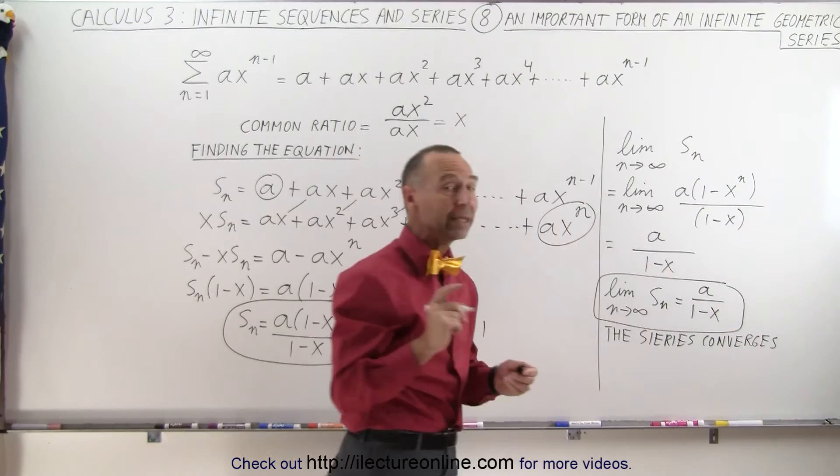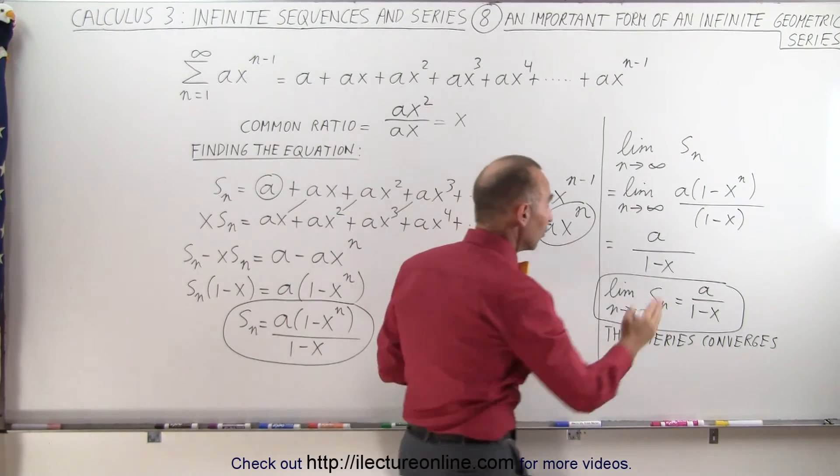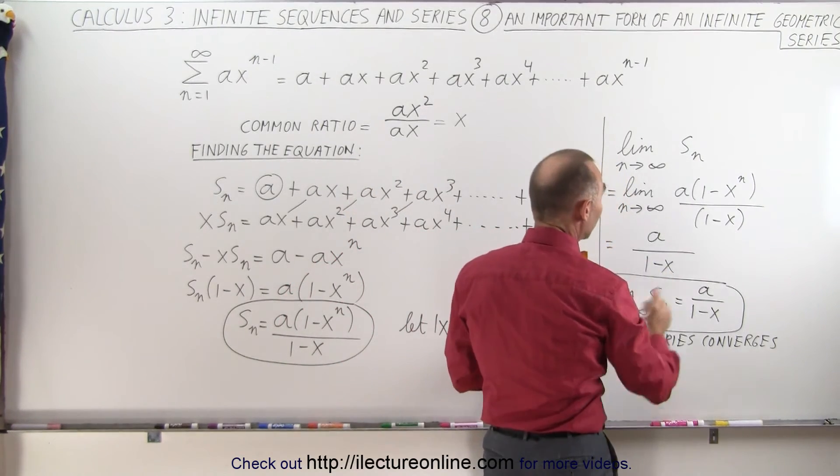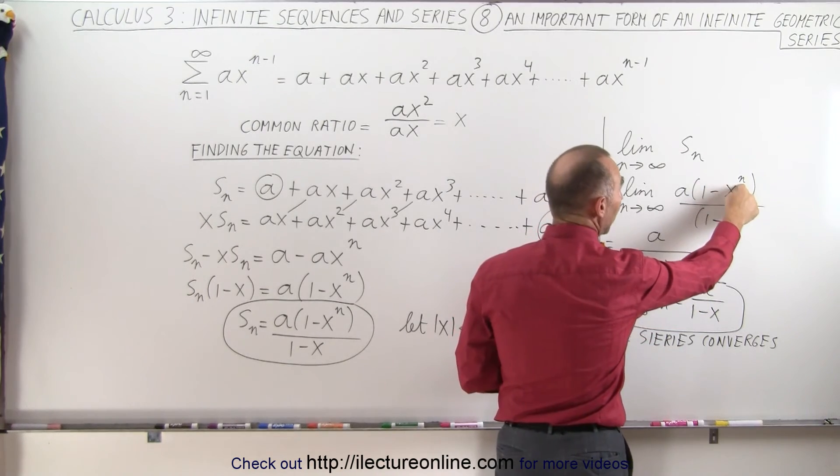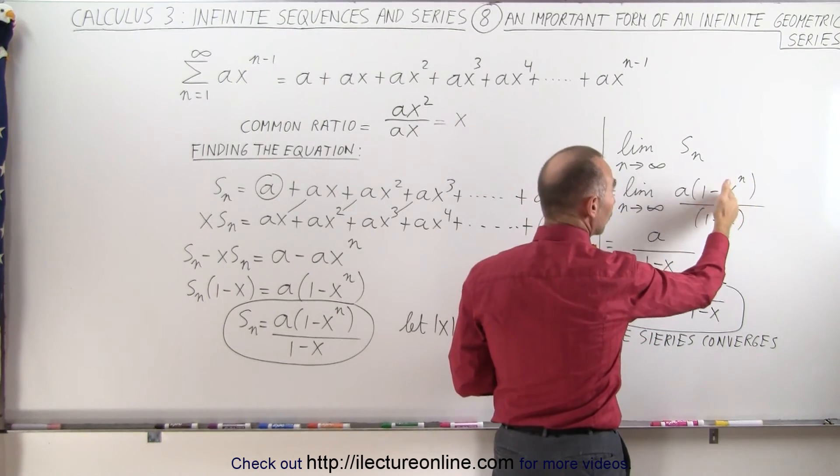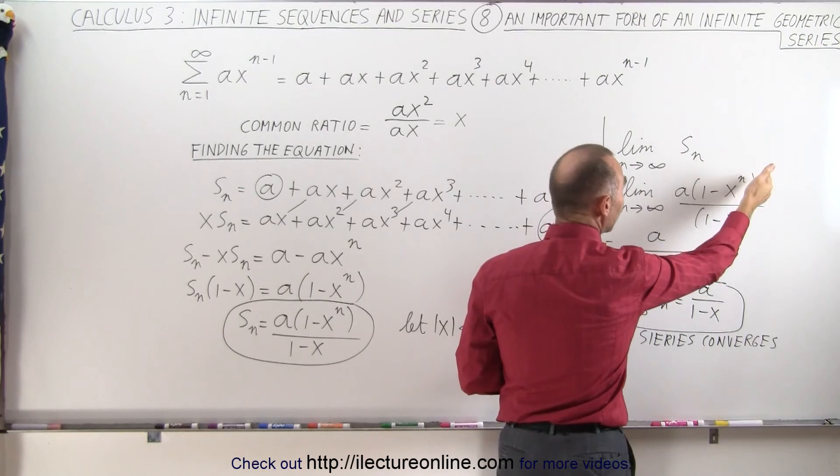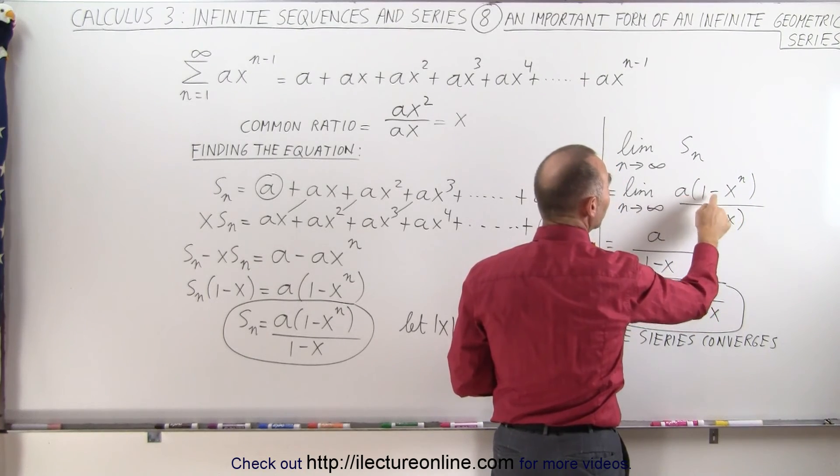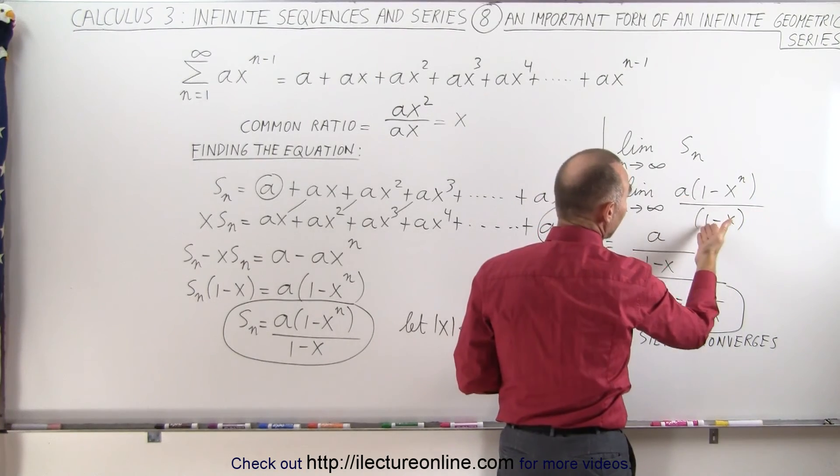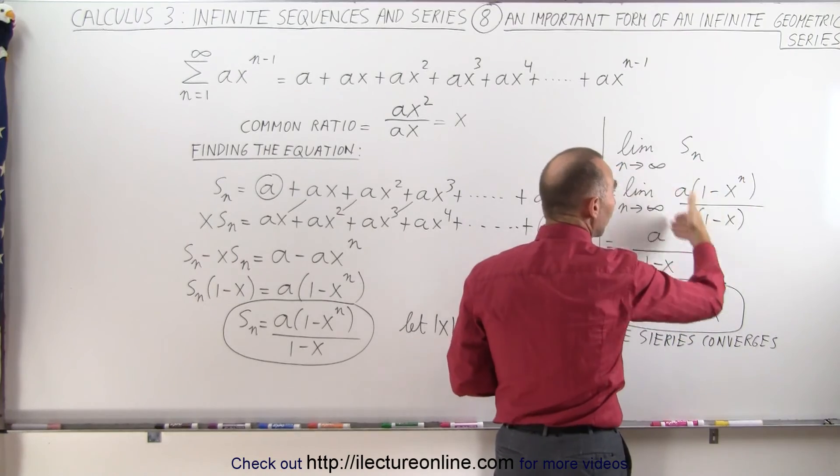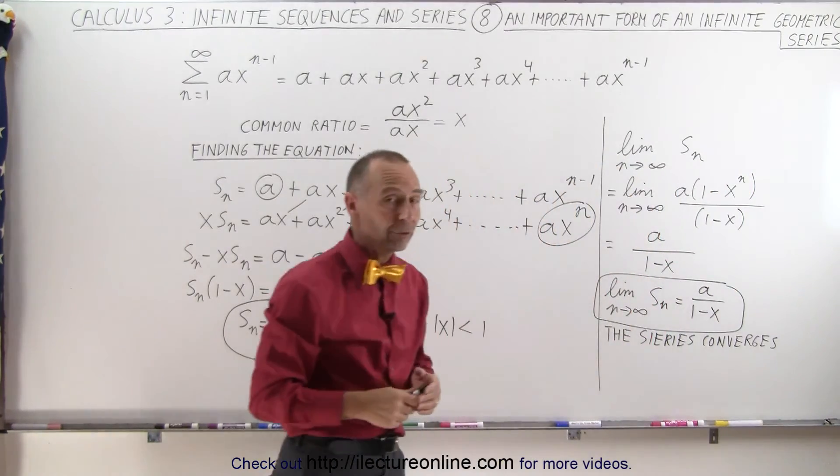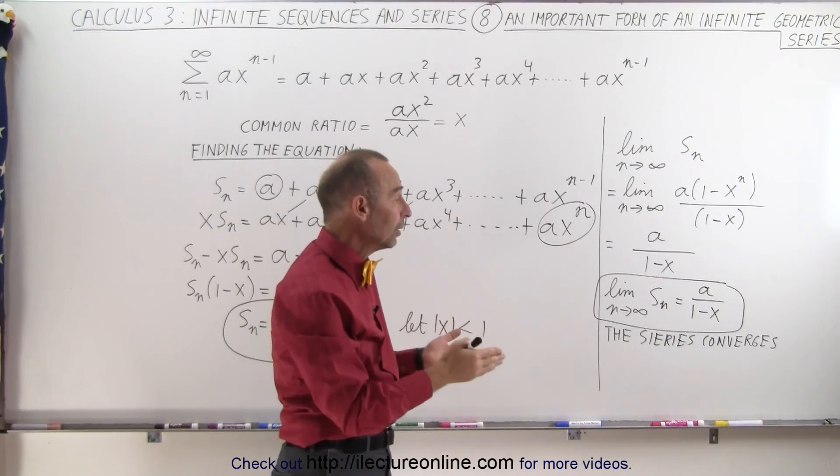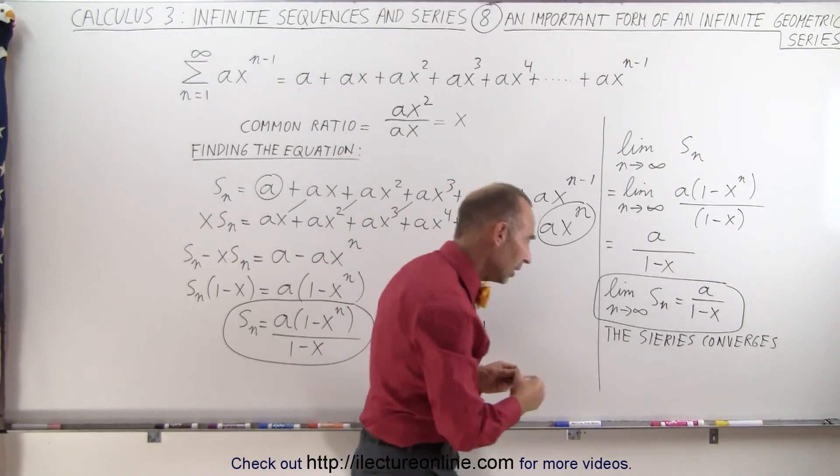However, that's only the case because the value for x is smaller than 1. Now, if x is larger than 1, then x to the n power will not go to 0, x to the n will go to infinity, and then we have a times minus x to infinity divided by 1 minus x, then the whole thing will not converge, the series will diverge. So for values of x greater than 1, the series will diverge.